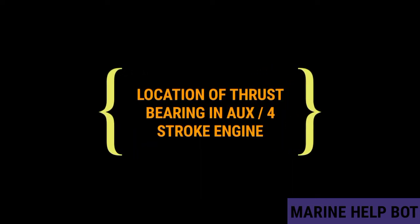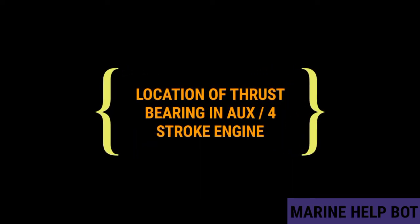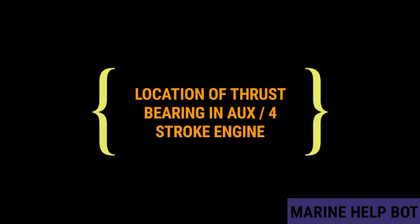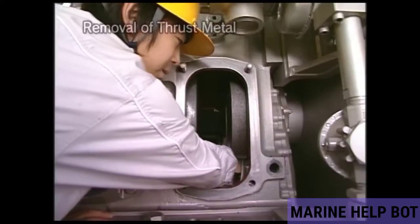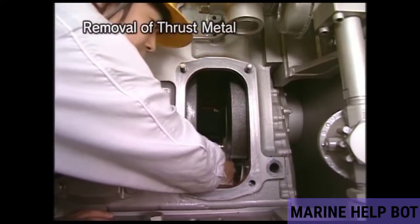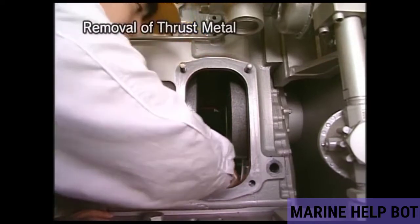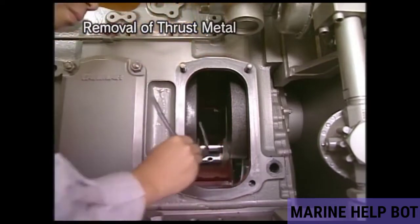The next question is about the location of the thrust bearing in an auxiliary or four-stroke engine. The location of the thrust metal is at the last journal bearing near the flywheel side. To remove the thrust metal, we first have to remove the journal bearing cap, and then we can easily remove the thrust metal.